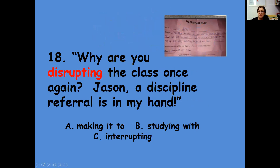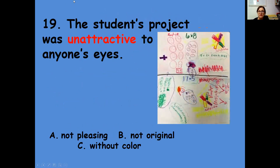Why are you disrupting the class once again, Jason? A discipline referral is in my hand. So if Jason is disrupting and he's getting a discipline referral to go to the principal, does 'disrupting' mean making it to, studying with, or interrupting? A lot of times you will see the base word there — you see that 'rupt' in both of those. Number nineteen: the student's project was unattractive to anyone's eyes — not pleasing, not original, or without color? Here you need to know that 'un' means not and 'attractive' means it looks good, so 'unattractive' means not pleasing.